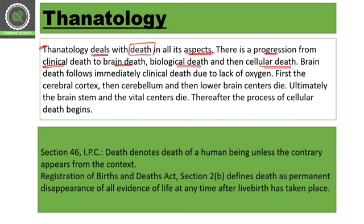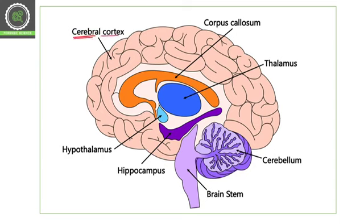Brain death follows immediately after clinical death, and it happens because of lack of oxygen. First, the cerebral cortex gets affected, then the cerebellum, and then the lower parts or lower centers of the brain die. Here we can see the cerebral cortex — this is the first area in which we see the effect of lack of oxygen, then cerebellum, then lower centers.